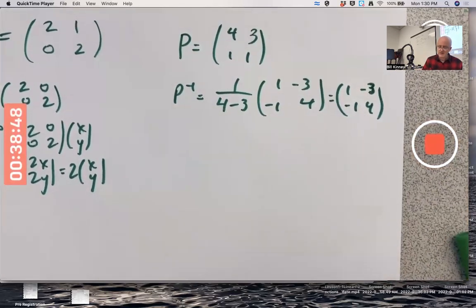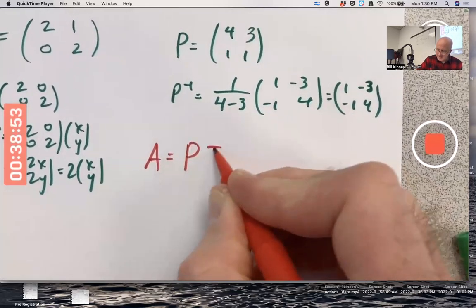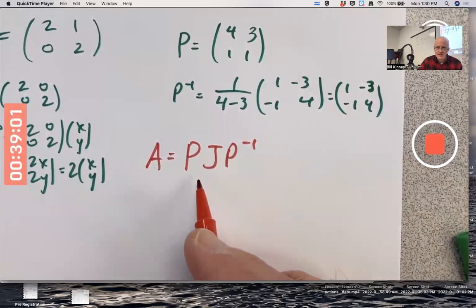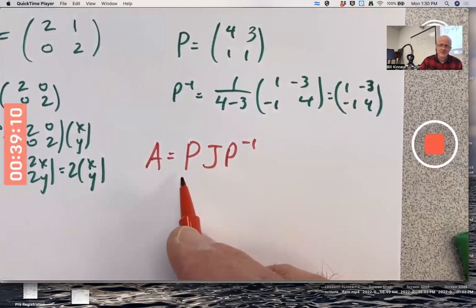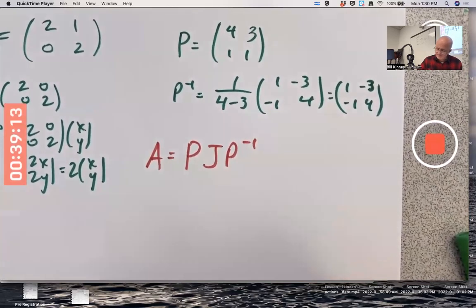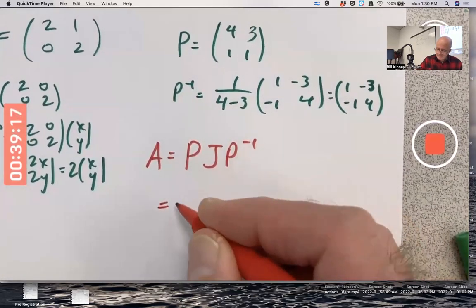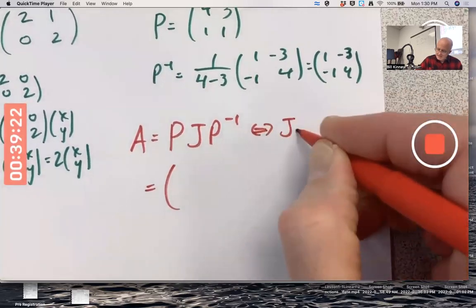If I make a matrix A that's P, J, P inverse, the inverse of P inverse is P itself. Usually, this is equivalent to saying J is P inverse AP.